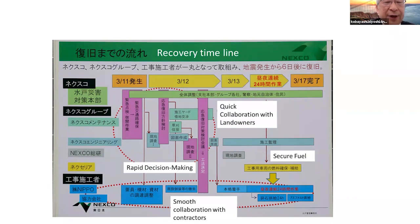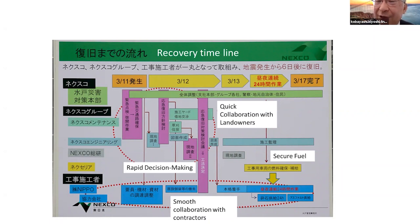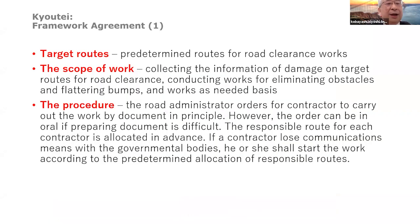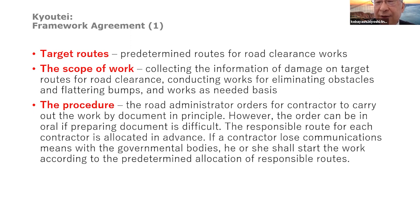This figure explains the recovery timeline — it is a complex system but well organized. It is too late to start preparing this kind of timeline after a disaster occurs. We must prepare these schemes in advance, before disaster strikes. A lot of institutional arrangements are necessary — 'Kyote,' a Japanese term for framework agreements for emergencies — this kind of institution is totally necessary, and we are very proud to have established this kind of institutional infrastructure.